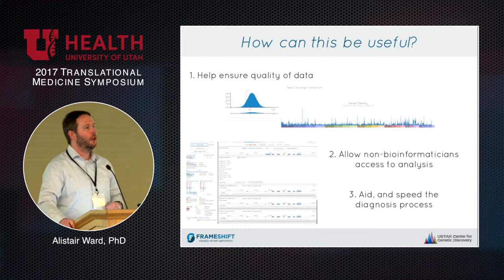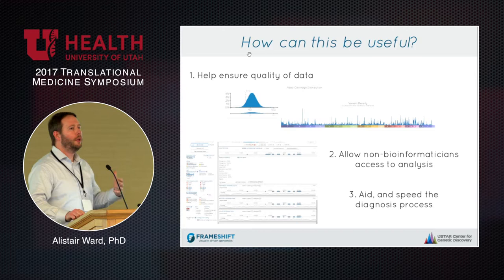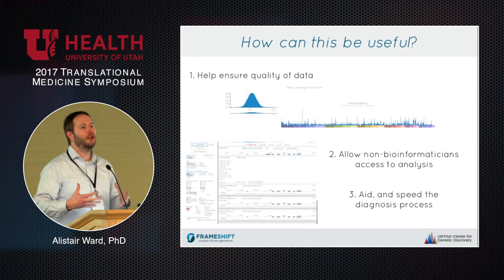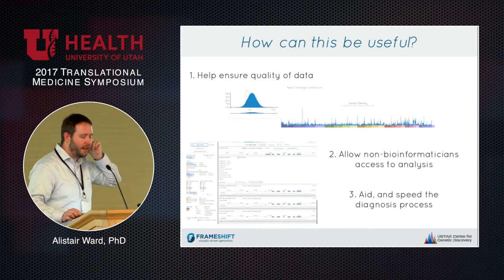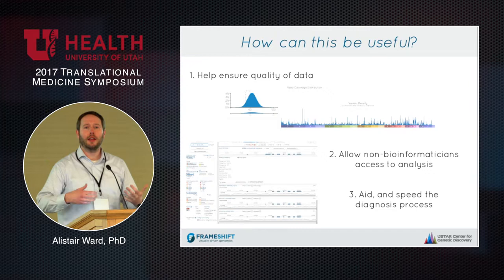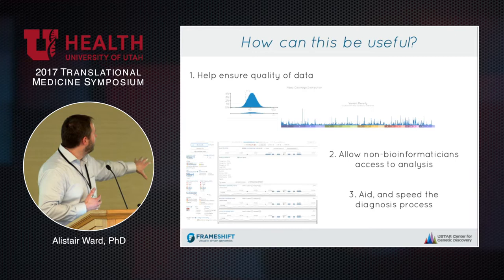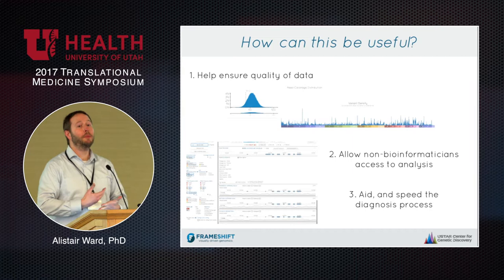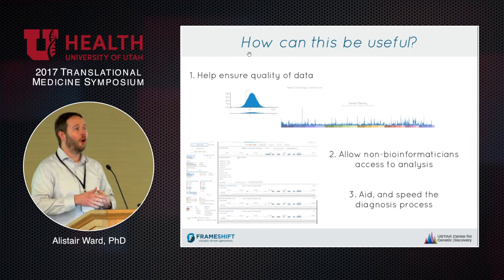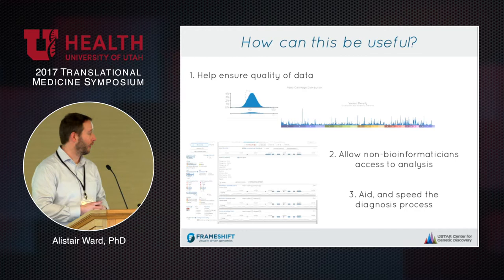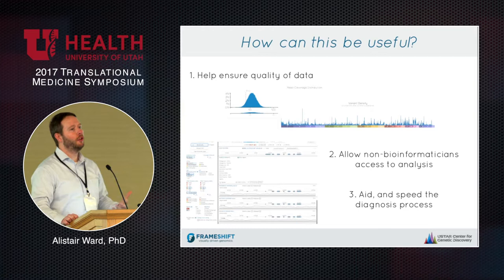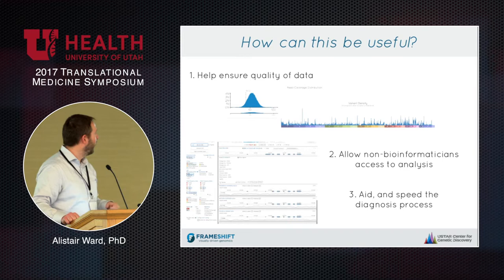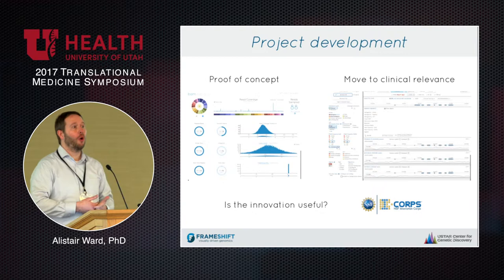The way we envision this being useful in a clinical setting is through a number of different applications built on this platform. We begin by making sure the data is actually good — we have applications showing distributions of data to get a quick idea of whether the data quality is sufficient to proceed to the next step of analysis. One of our tools looks at a family trio of whole genome sequencing — mum, dad, and the proband — and asks whether there are any mutations in this child that have been seen before associated with the disease, or that may have significant impact on protein function. The hope is we can get this into the hands of medical professionals so they can do analysis themselves, speed up analysis, and help with diagnosis.